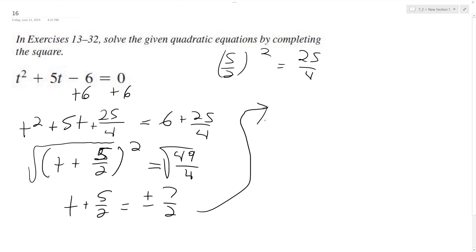If I subtract 5 halves from both sides, I get t equals negative 7 halves minus 5 halves, which is negative 12 over 2, which is negative 6. And positive 7 halves minus 5 halves equals 2 over 2, which is positive 1.